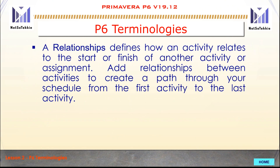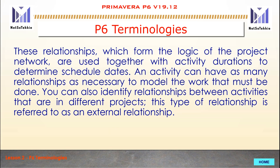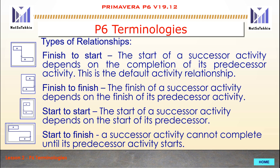Relationships define how an activity relates to the start or finish of another activity. Add the relationships between activities to create a path through your schedule from the first activity to the last. These relationships form the logic of the project and are used together with activity durations to determine schedule dates. An activity can have as many relationships as necessary. You can also identify relationships with activities in different projects, referred to as external relationships. There are four types of relationships: Finish to Start, Finish to Finish, Start to Start, and Start to Finish.